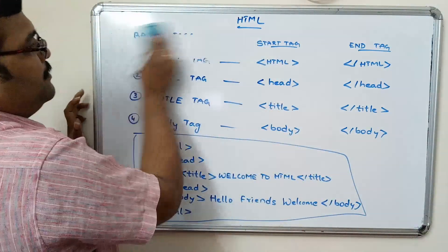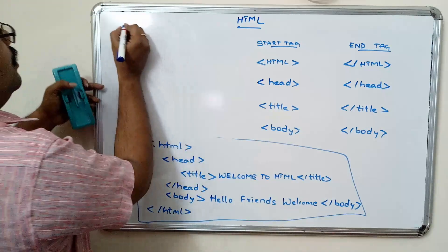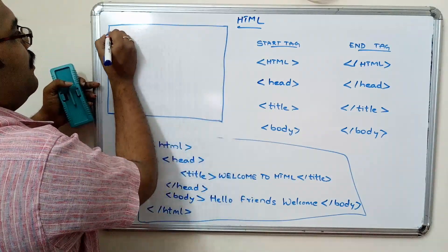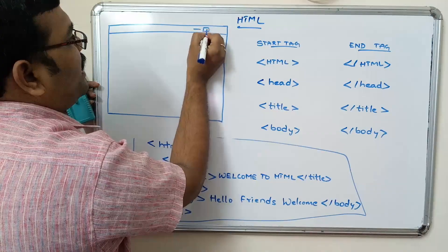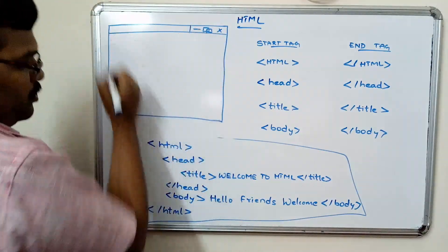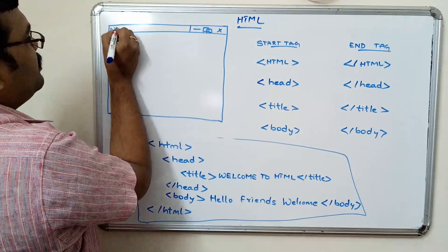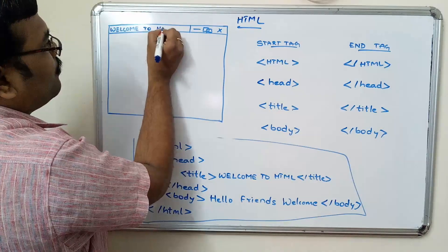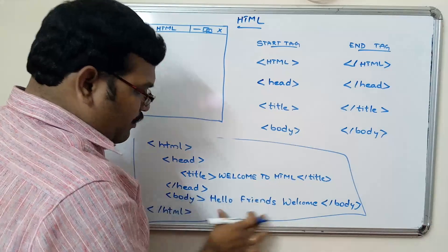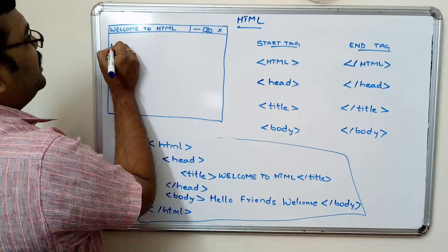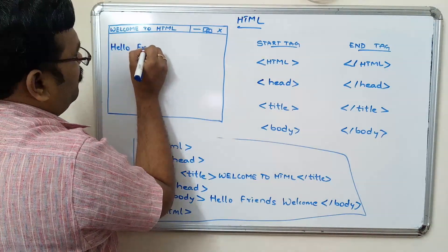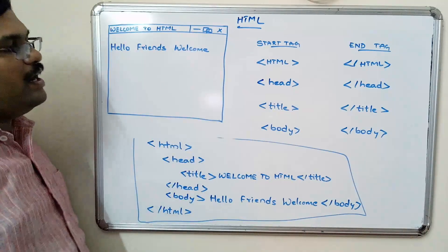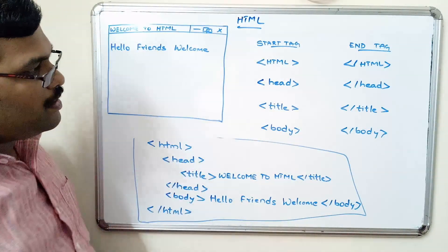Let us see the output. Here is the web page — the title 'Welcome to HTML' is displayed in the title bar. In the body we wrote 'Hello friends' and 'Welcome', and these are displayed in the body area of the browser. Hope you understand this example.